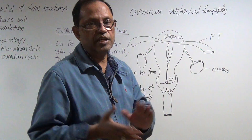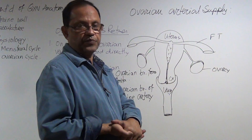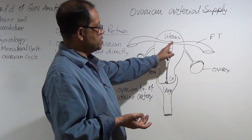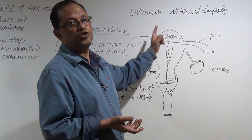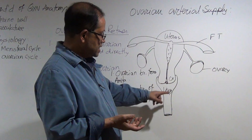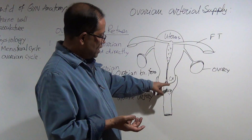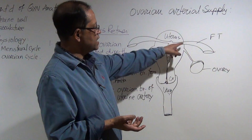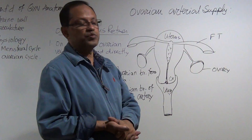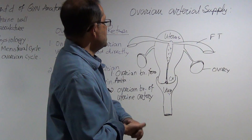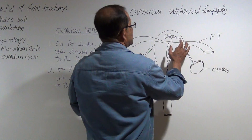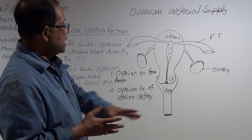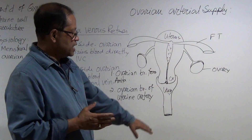The mother source is the internal iliac artery. The uterine artery has tremendous supply — it provides blood to the cervix, the vagina, and the fallopian tubes.